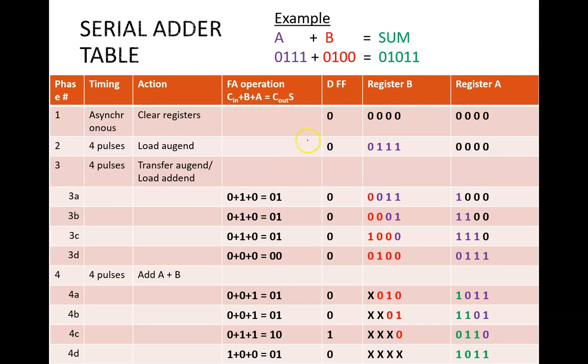The first phase is to asynchronously clear the registers. This causes all of the nine stored bits to equal 0.